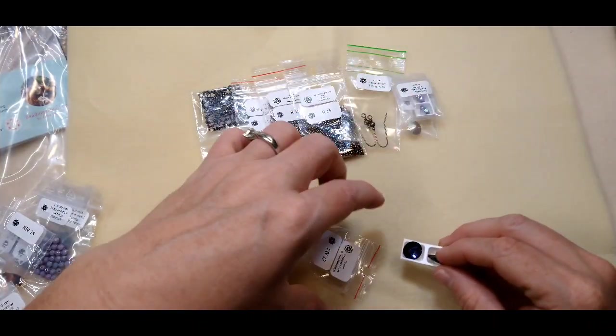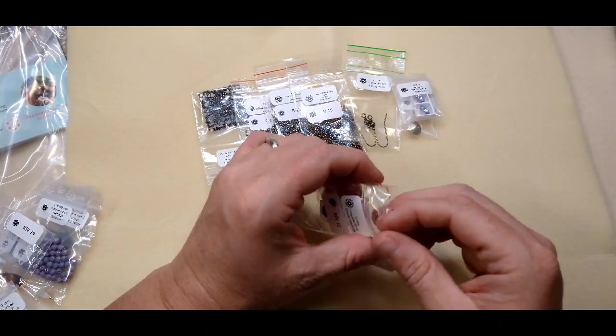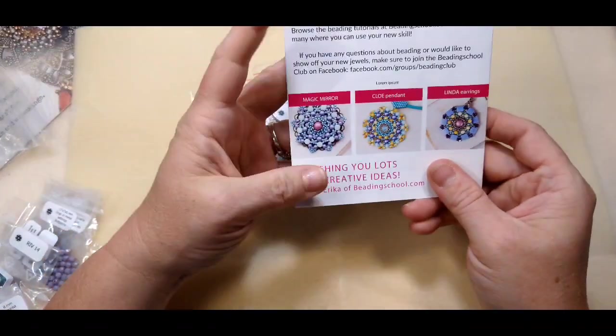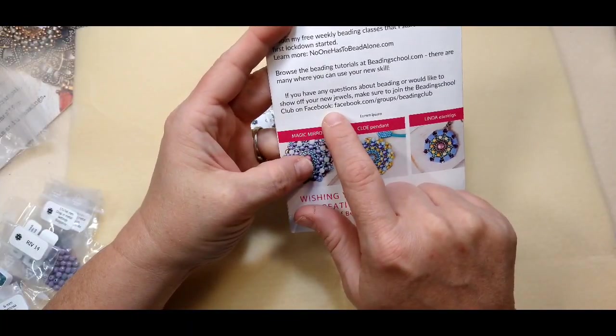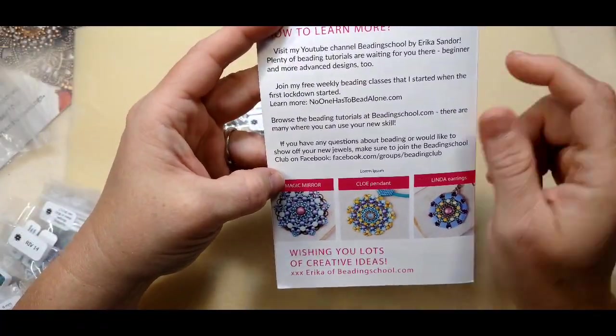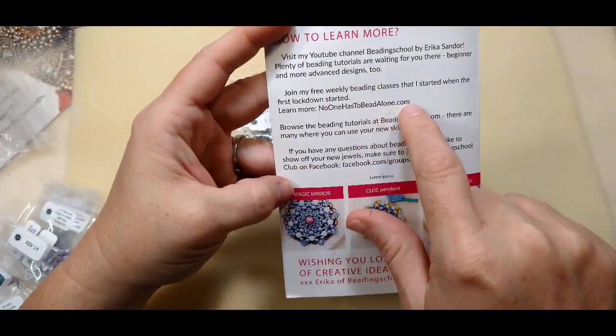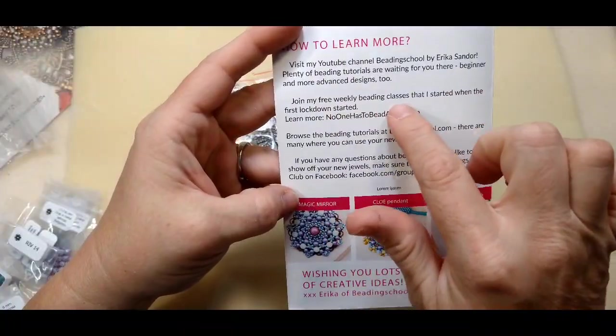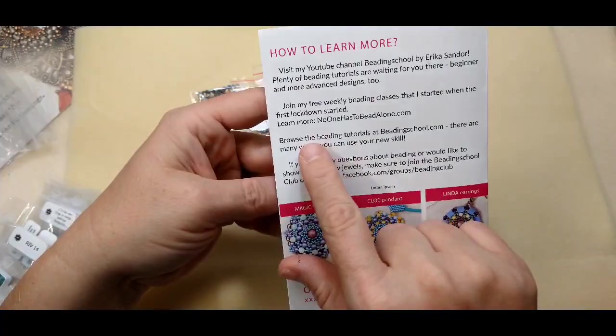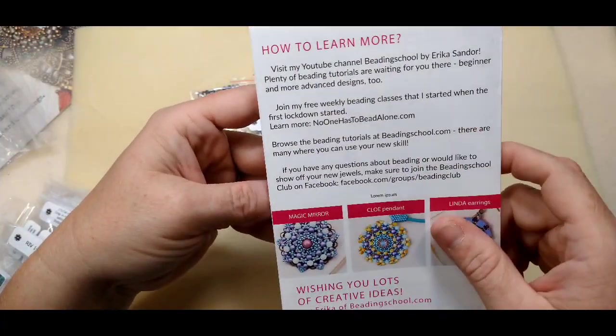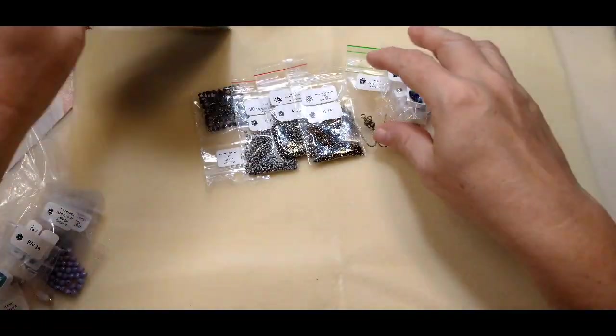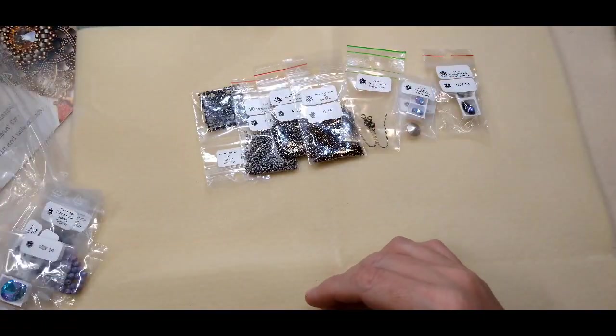This is 12 millimeter Preciosa Rivoli and crystal heliotrope. These are beautiful too. They all are beautiful. So if you're wanting to learn, this is your opportunity. Now, beadingschool.com before I go on here, I will show you. You can go, they have a Facebook club where Erica comes on with live videos teaching you to bead. It's called no one has to bead alone and it's free weekly classes. So she started this when the first lockdown started and you can go, there are beading tutorials at beadingschool.com. There are so many that you can do. Just absolutely beautiful products there.